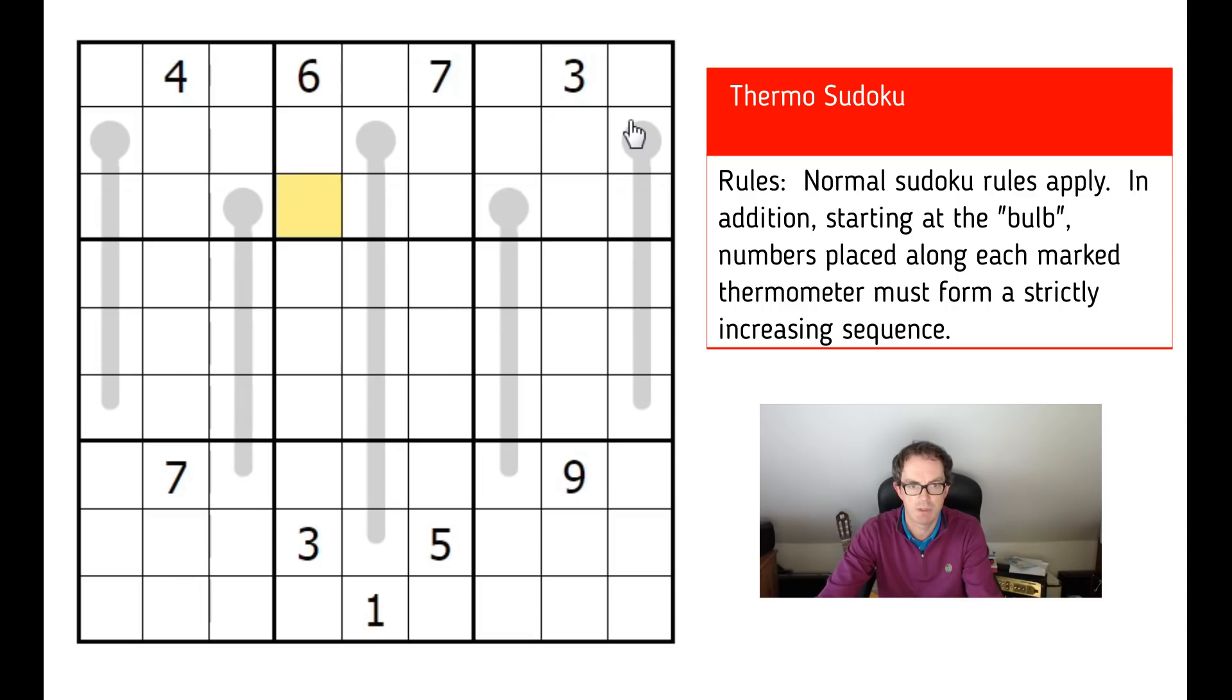Now, without further ado, I'm now going to look at this puzzle. So you can see there's very few given digits at all. And in fact, only two digits are repeated. So there's these two threes and these two sevens.